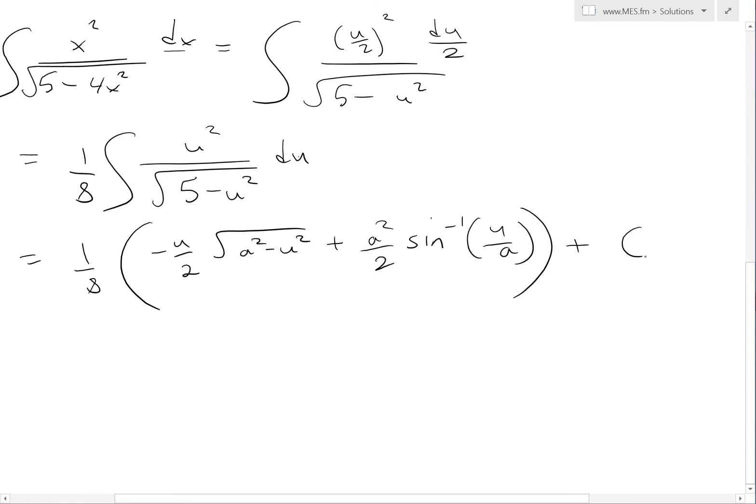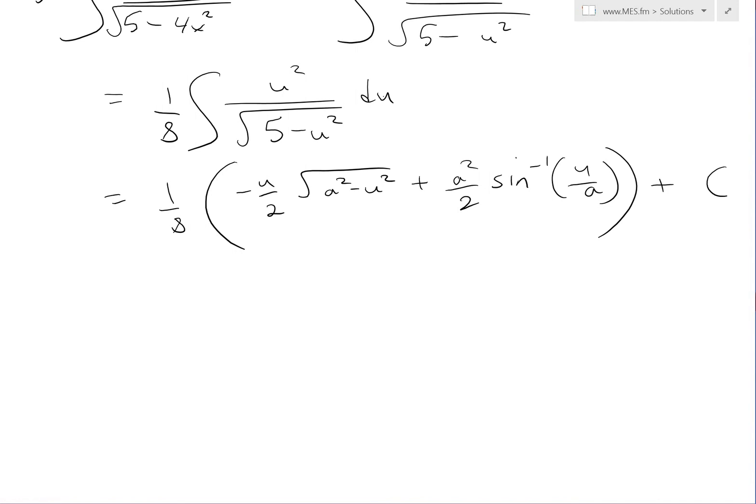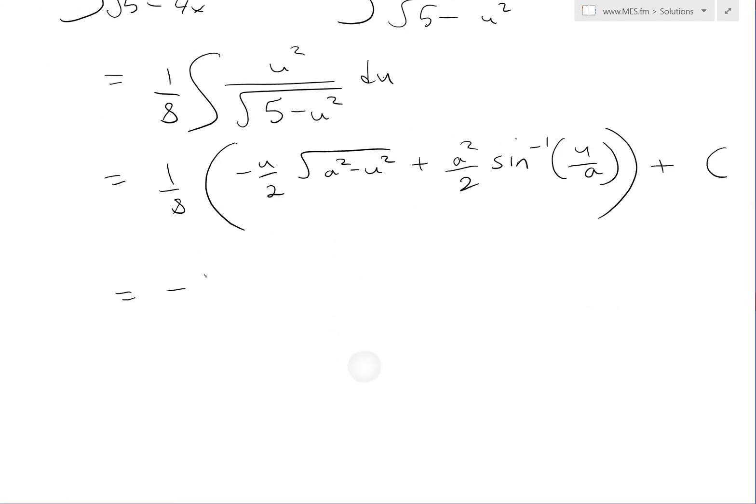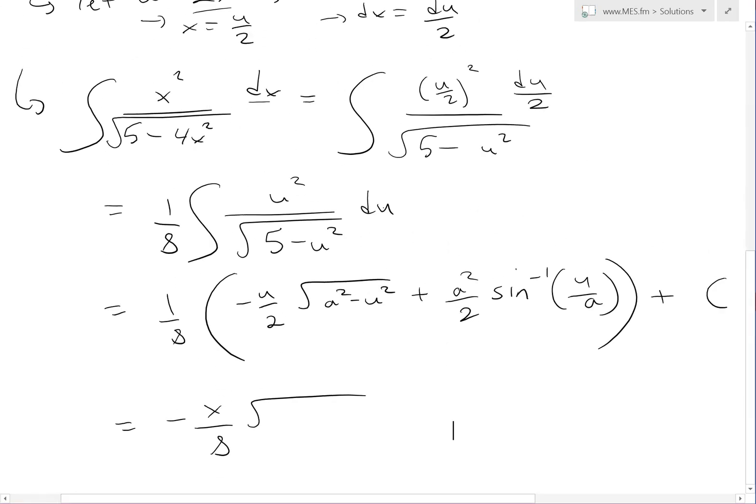So we have all this, and now we plug things in. This u becomes 2x, so the 2s cancel, it'll just be x over 8. And square root, now what we have is a squared, so a squared equals 5, which means a equals square root 5.